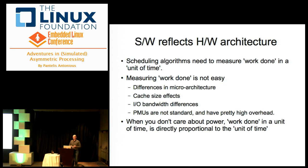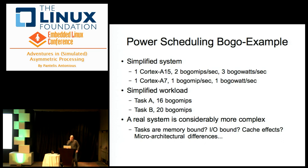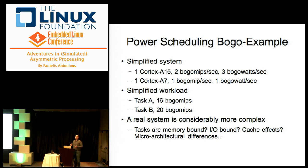When you don't care about power at all, the work done in a unit of time is directly proportional to the unit of time, so you can measure how many MIPS a task took and figure out its power consumption. To make things simpler, let's try a rough power scheduling example — a BOGO example. Say you have a Cortex-A15 that executes two BOGO MIPS per second and consumes three BOGO watts, and a Cortex-A7 that executes one BOGO MIPS per second and consumes one BOGO watt.